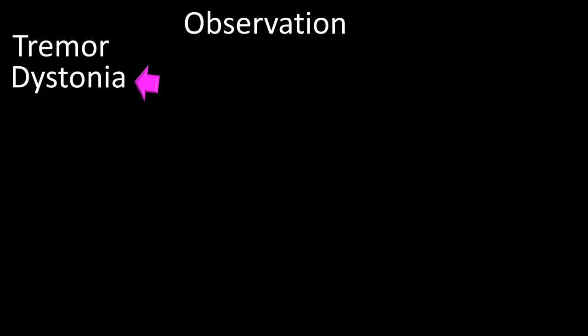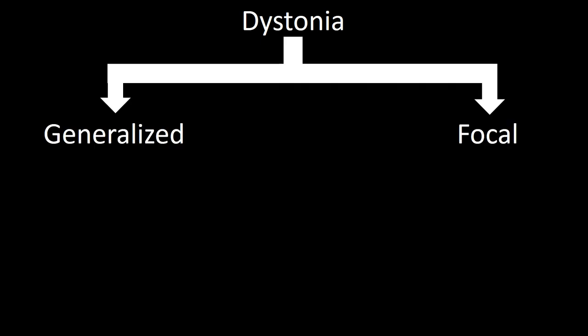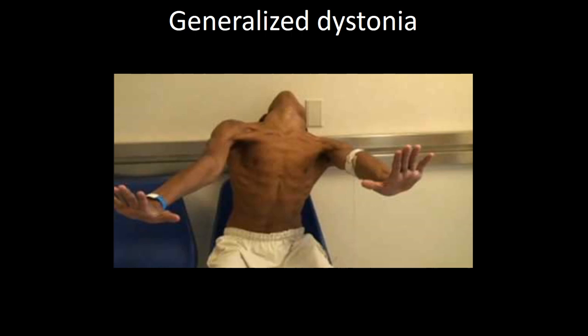Next, I'd like to tell you about dystonia. Dystonia is defined as an involuntary contraction of agonist and antagonist muscles leading to a position of extreme flexion or extension. Dystonia can be generalized or focal. Generalized dystonia can be an impressive condition involving the hands, shoulders, neck, and also the lower extremities.